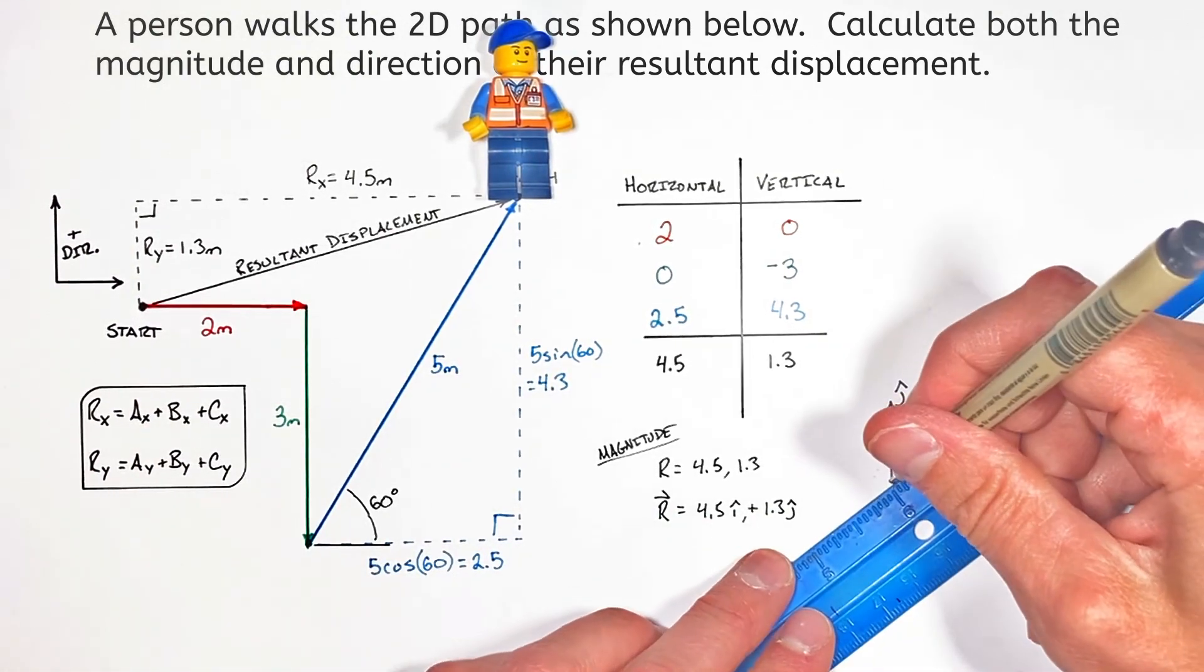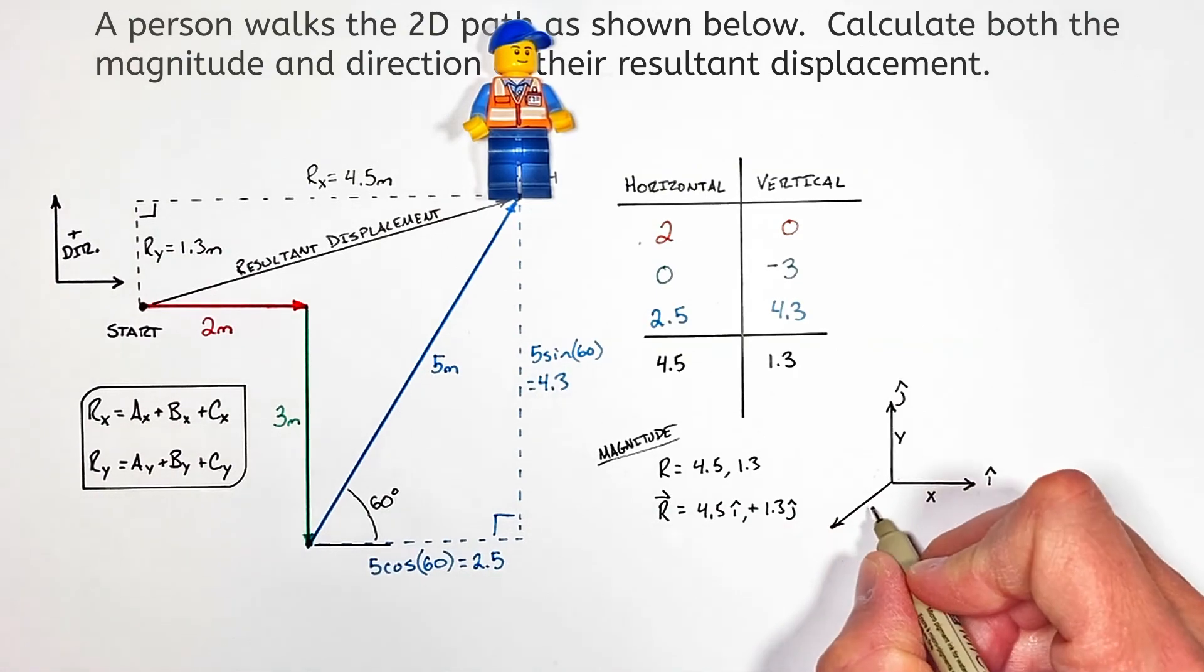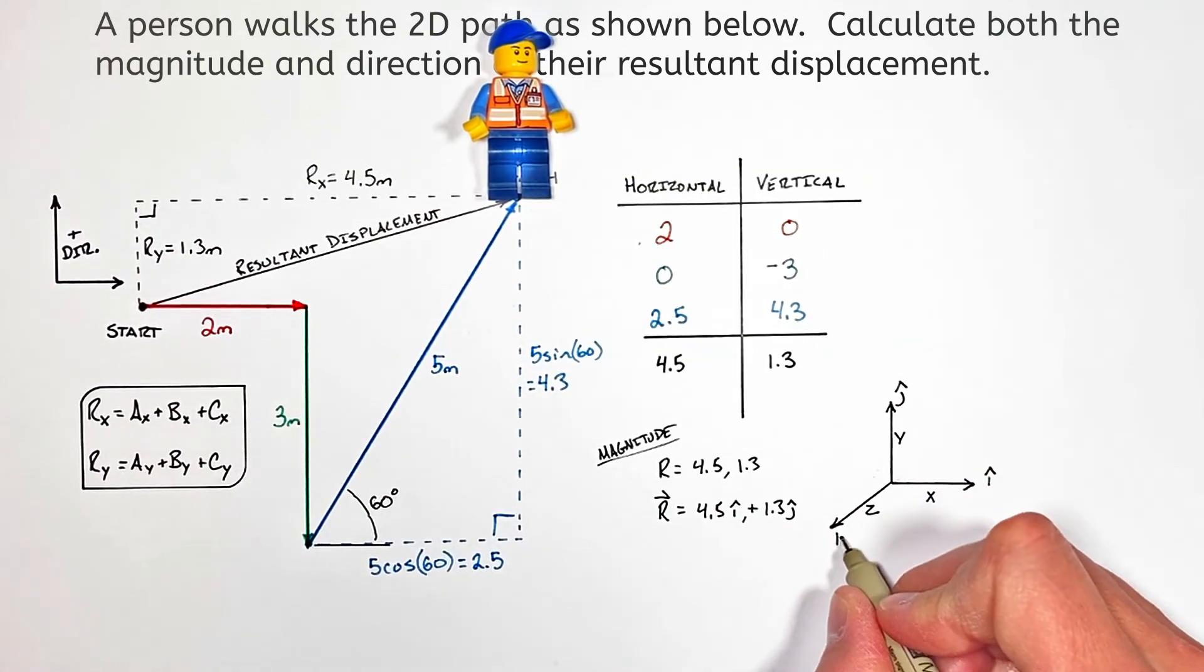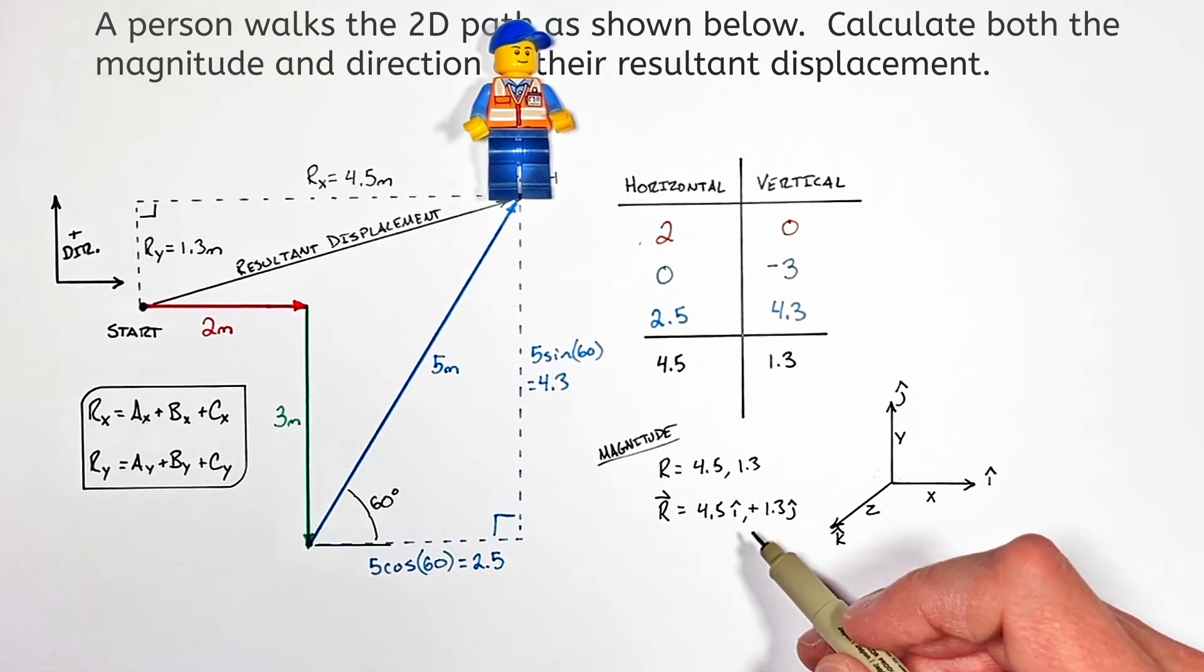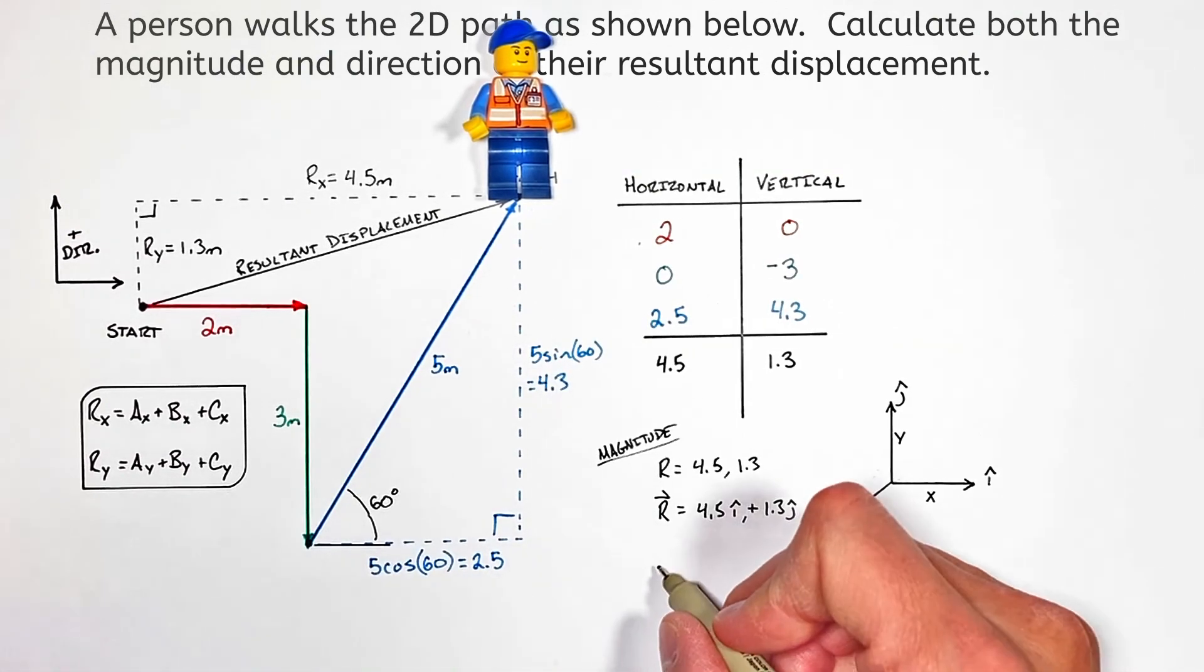And if you really want to nerd it up, there's a z axis which we say is in the k direction. Now despite this funny nomenclature, we haven't actually come up with the magnitude of our resultant vector.